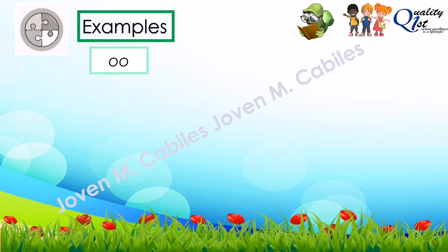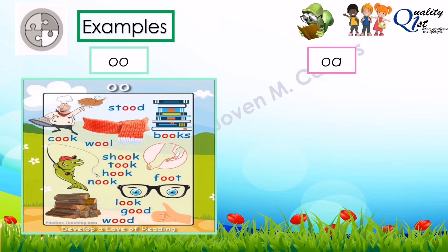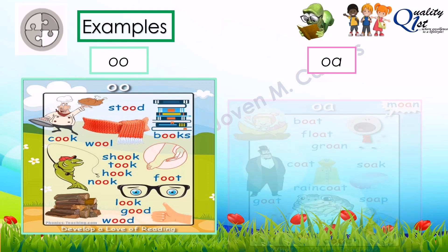Now let's have digraph O as in OO and OA. For the short OO sound, we have: stood, cook, wool, books, shook, took, nook, foot, look, good, and would.